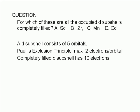To answer this question, let's write the ground state electron configuration for these atoms. For scandium, this is the electron configuration. The only d orbital that is occupied is the 3d orbital, but it has only one electron.